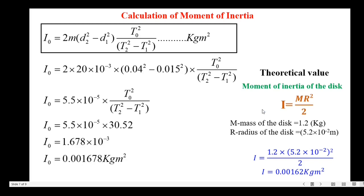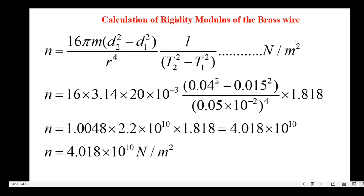Here I have given the theoretical calculation of moment of inertia of the given disc. The formula is I = mr²/2, where m is the mass of the disc and r is the radius. Mass of the disc is 1.2 kg and radius is 5.2 × 10⁻² meters. Substituting, the theoretical moment of inertia is 0.00162 kg·m². The calculated experimental value is 0.001678 kg·m².